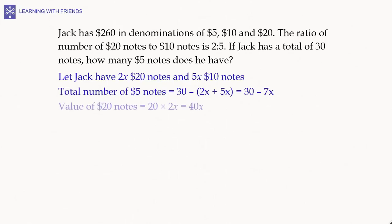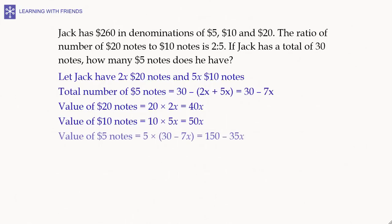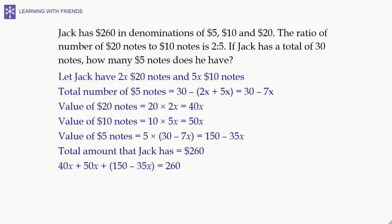The value of the 20-dollar notes is 20 multiplied by 2x, which is 40x. The value of the 10-dollar notes is 10 multiplied by 5x, which is 50x. The value of the 5-dollar notes is 5 multiplied by (30 minus 7x), which is 150 minus 35x. Since the total amount Jack has is 260 dollars, we get the equation: 40x plus 50x plus 150 minus 35x equals 260.